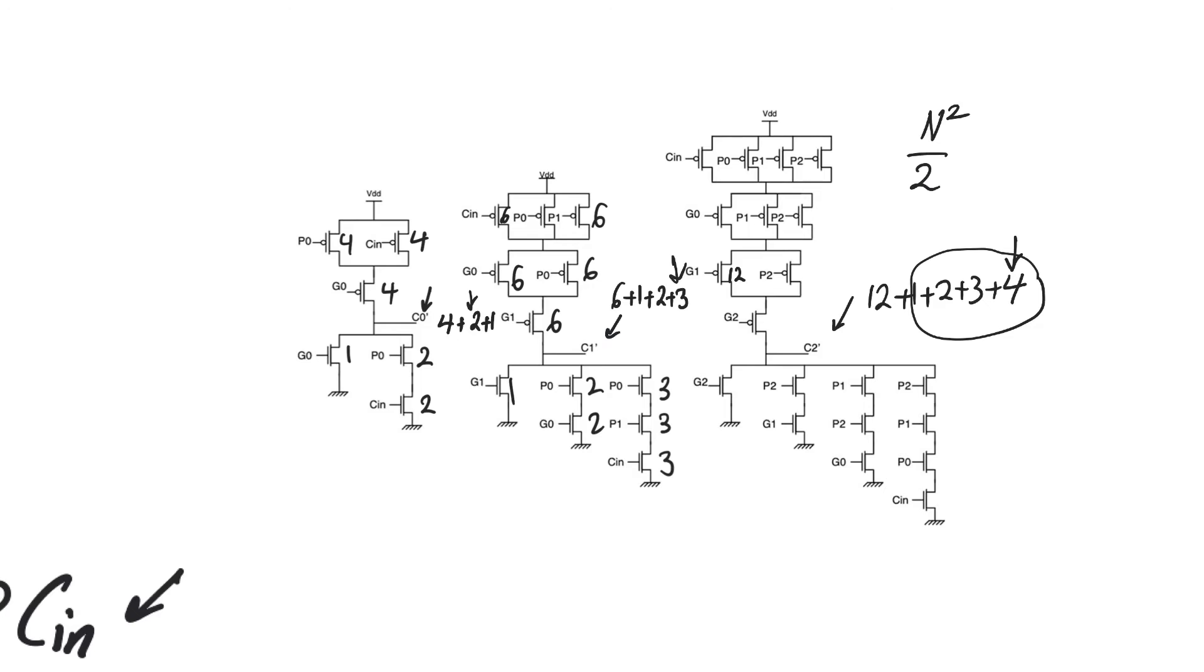In fact, it seems like we are doing more effort than we need to do, because to calculate C2, we're actually recalculating C1 and recalculating C0. Whereas, these would have already finished by the time C2 finishes. So why not use their values in order to calculate C2, which returns us back to the idea of the ripple carry adder with linear delay.